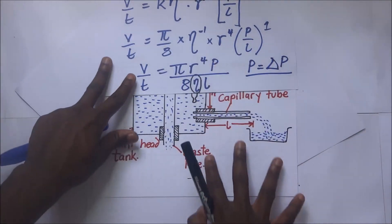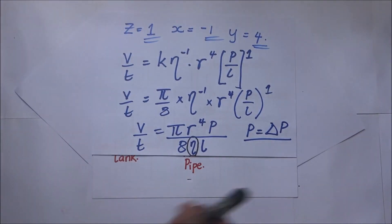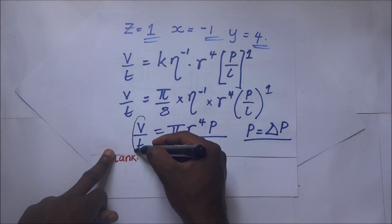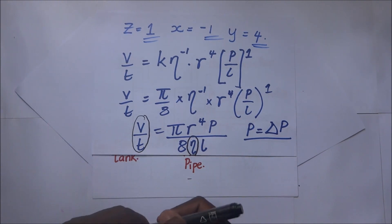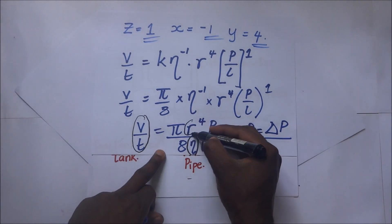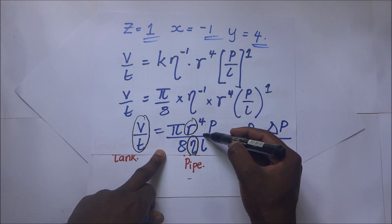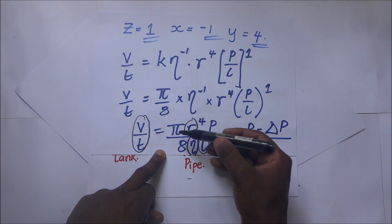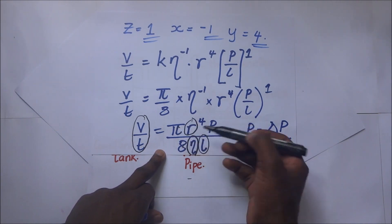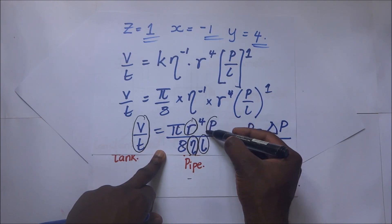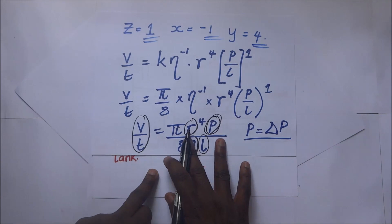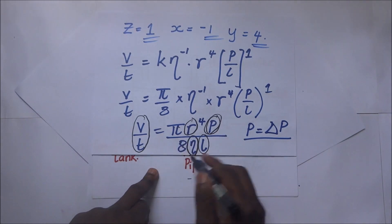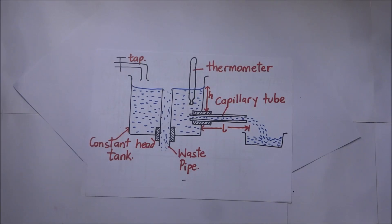We need to find the volume flow rate using the apparatus. After finding the volume flow rate, we are supposed to find the radius of the pipe and the length of the pipe — these are constants. We also need to know the change in pressure, and then we shall be able to find the coefficient of viscosity.